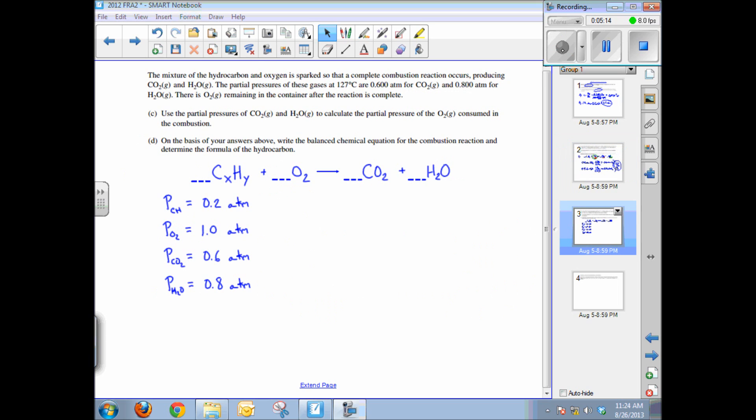So part D asks, on the basis of your answers above, the partial pressures of oxygen, carbon dioxide, and the initial unknown hydrocarbon, write the balanced chemical equation for the combustion reaction. So I've written here the partial pressures that we have calculated of all of the reactants and product gases. And if you notice, as we've mentioned, the partial pressures reflect mole ratios in an ideal gas.